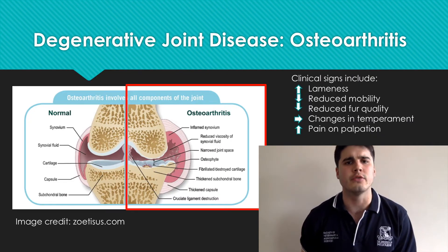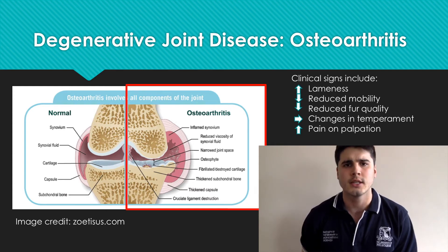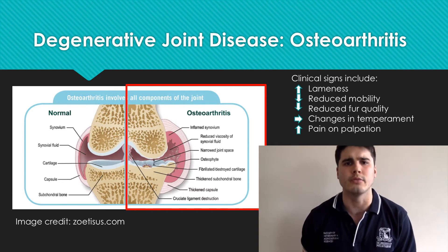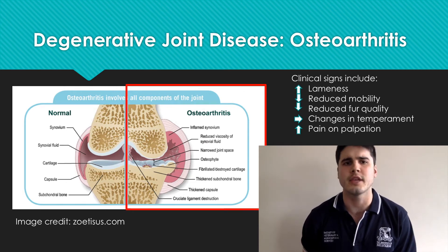Osteoarthritis, being a degenerative joint disease (DJD), is characterised by a degeneration of the articular cartilage in the joint. The breakdown of articular cartilage can further develop into fibrillation and fissures affecting the underlying subchondral bone. DJD can further be exacerbated by the development of osteophytes and thickening of the subchondral plate, and the degenerative disease can also include the synovial membrane.